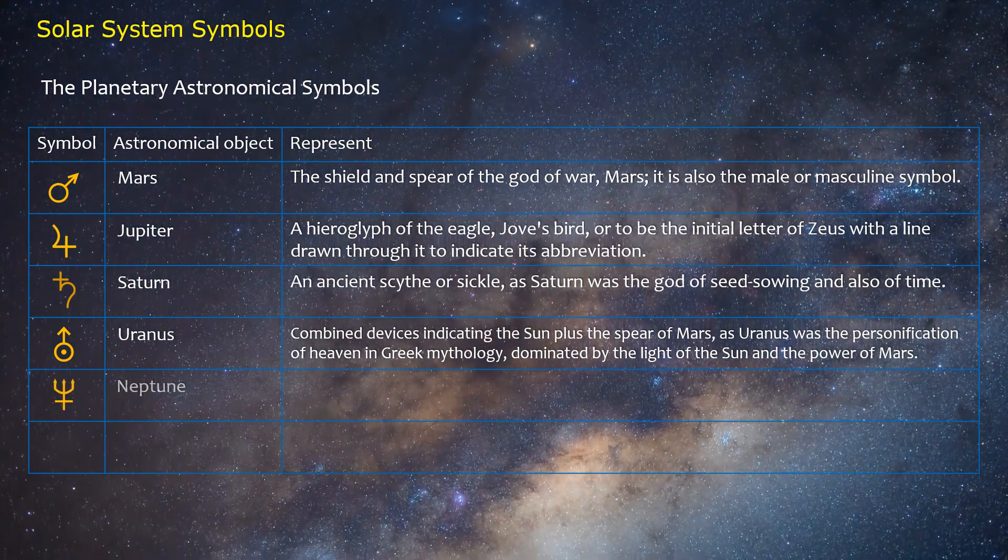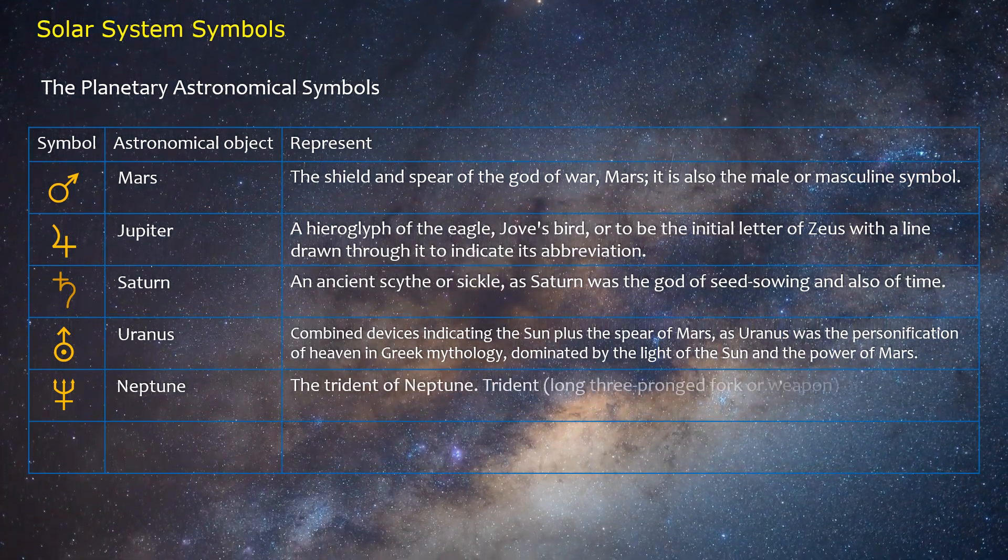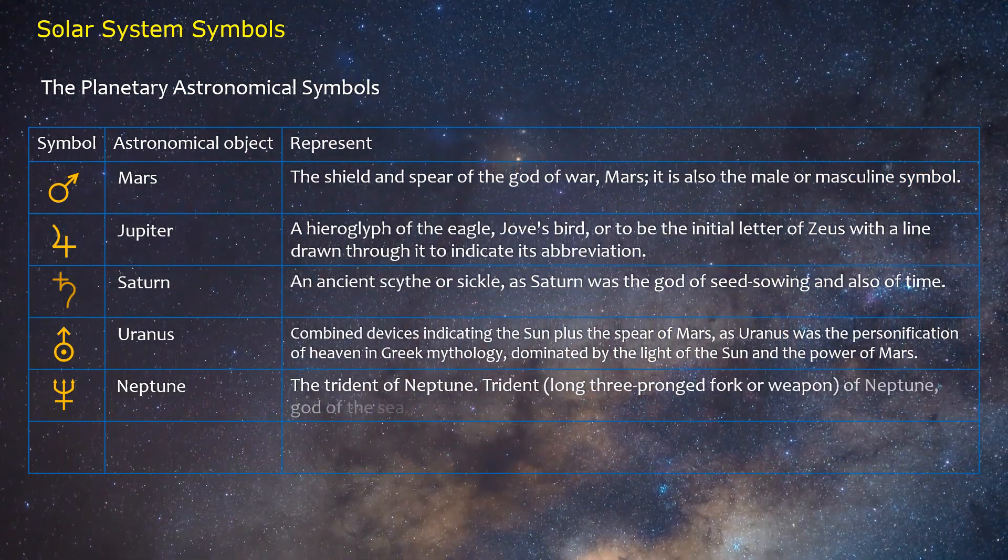Neptune: The trident of Neptune. Trident, long three-pronged fork or weapon, of Neptune, god of the sea.